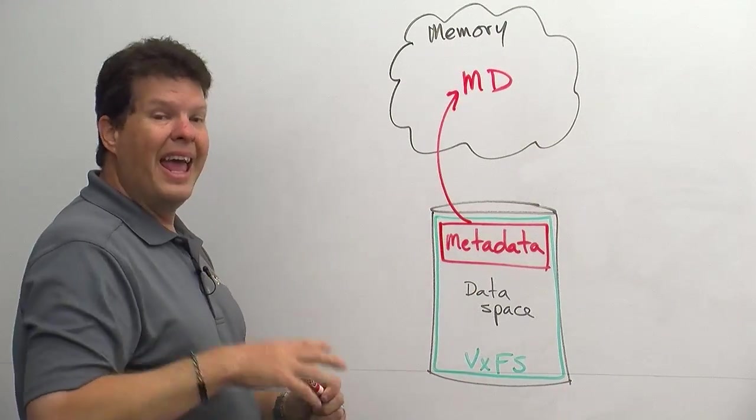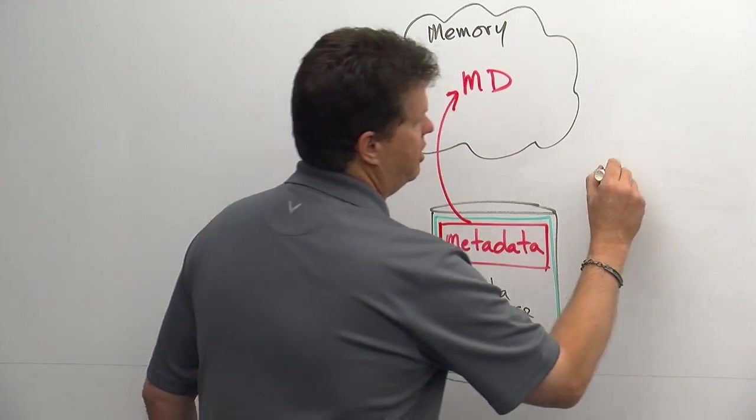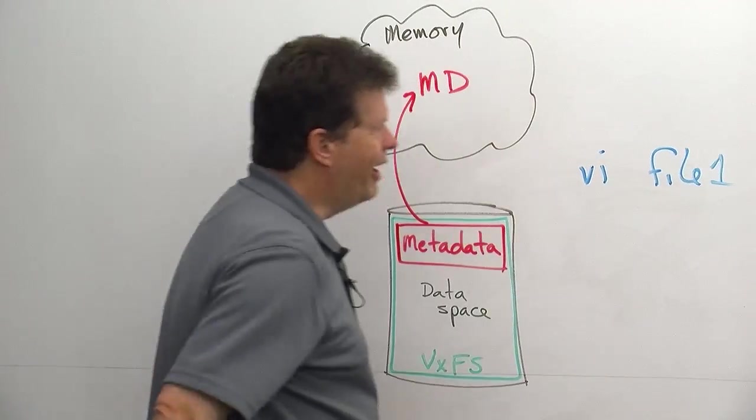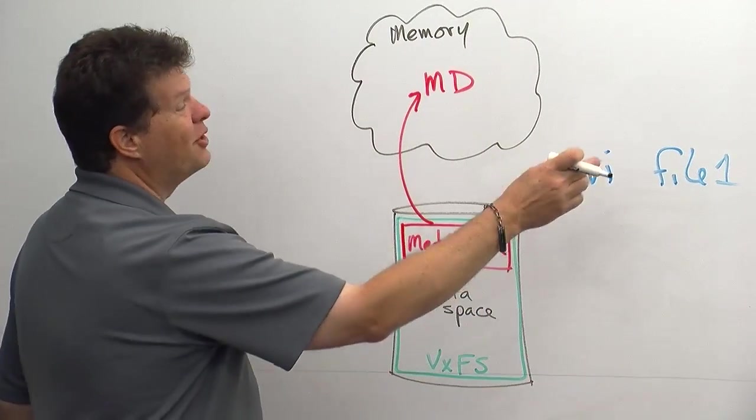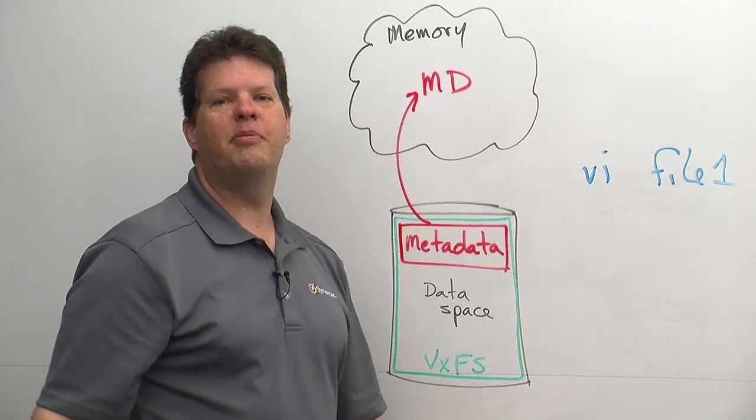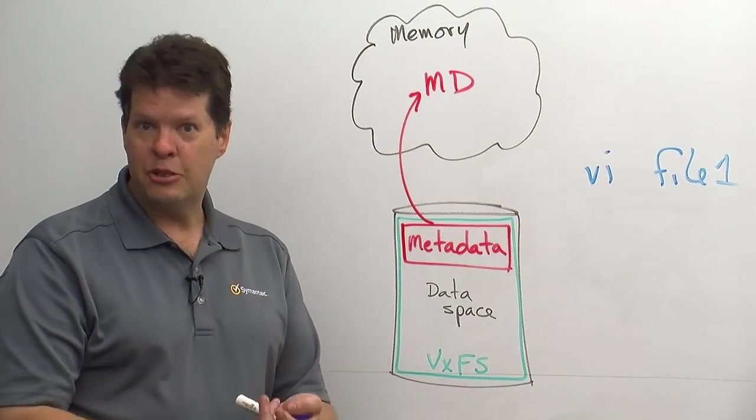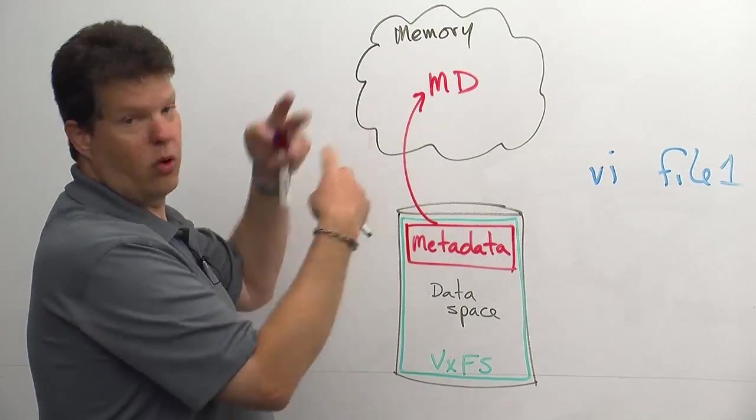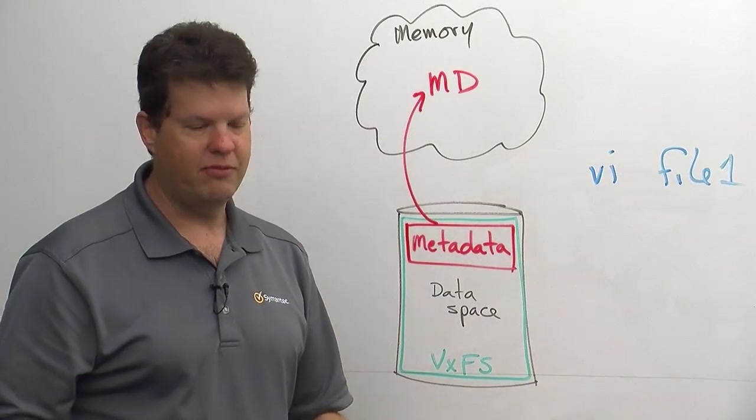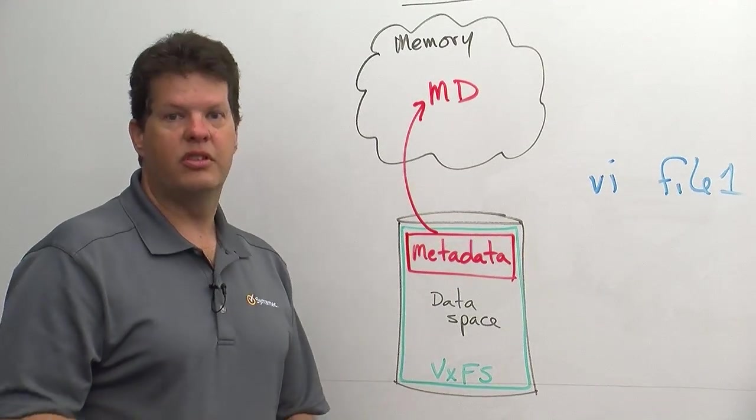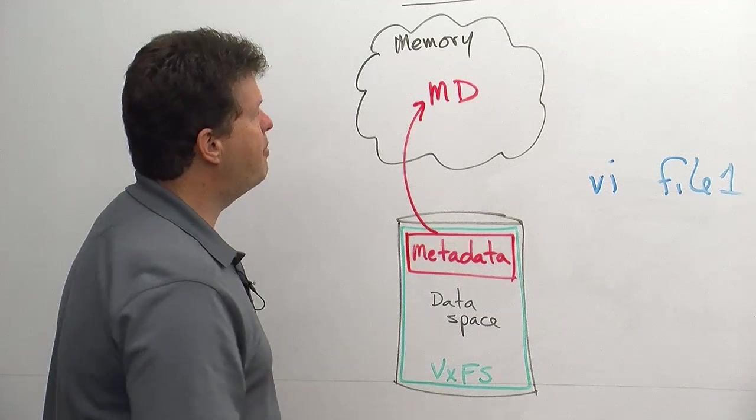So now, any time I create a file, so let's just VI a file here, I'll just call it file one, very original. So I create a file. A lot of things are happening in the metadata. We need to assign an inode, we need to assign disk blocks from the free extent map, or just a free block map for a general file system. And we need to update the directory tables, etc.